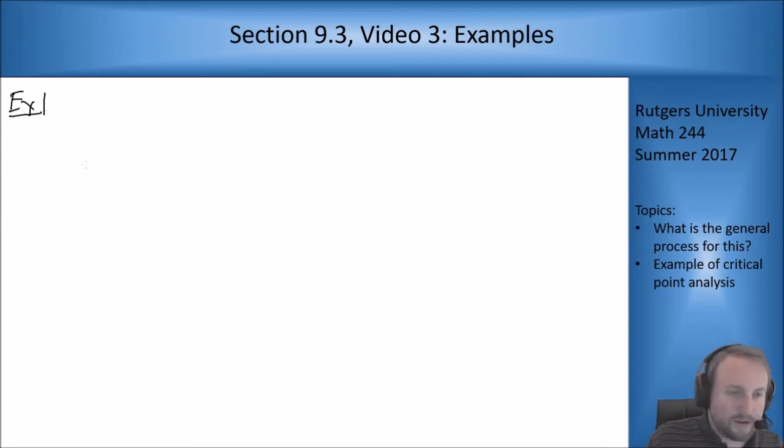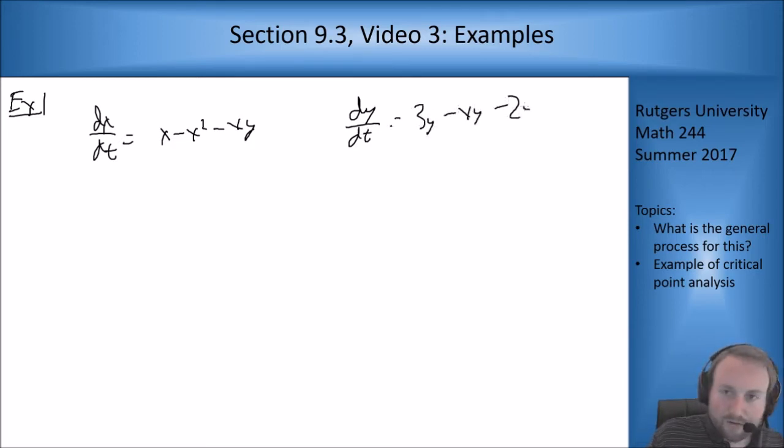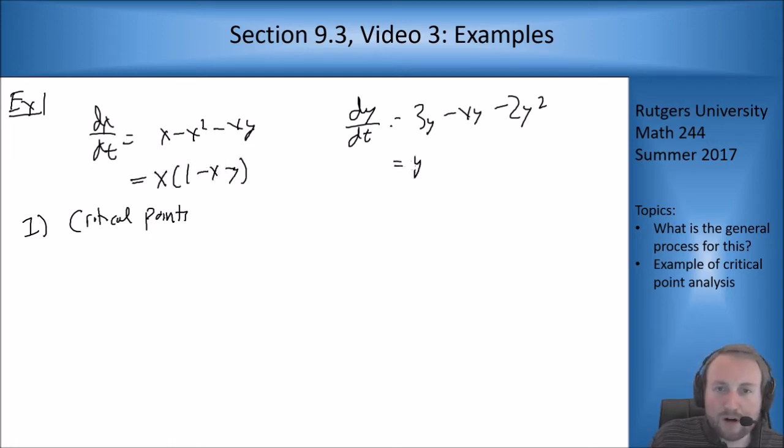The example is dx/dt equals x minus x squared minus xy, dy/dt equals 3y minus xy minus 2y squared. Step one is look for critical points. Let's write these differently by factoring: x(1 minus x minus y) and y(3 minus x minus 2y).